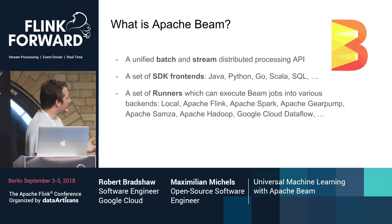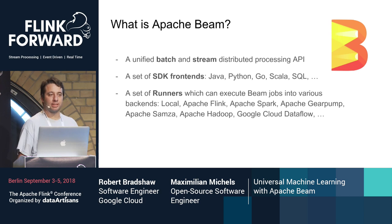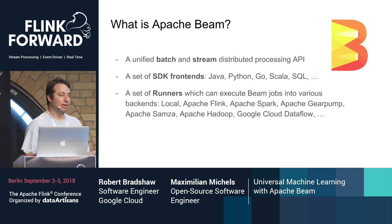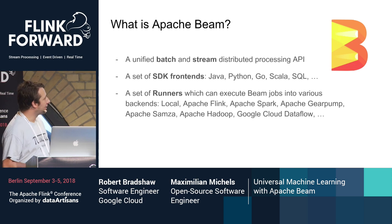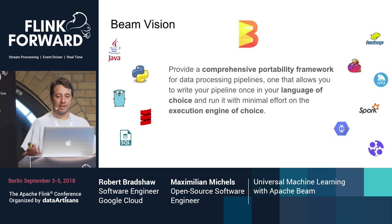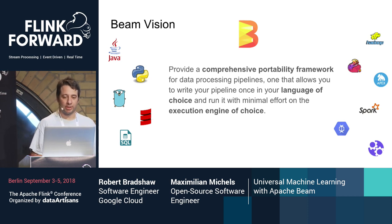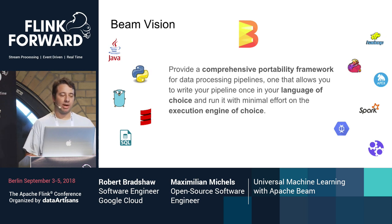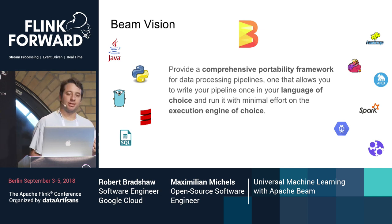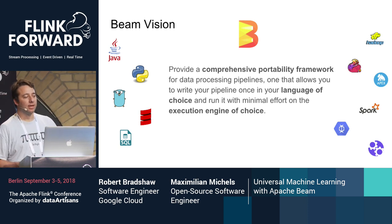Beam also provides a set of runners. A runner is something that can execute a Beam pipeline. You can run locally, on Flink, on Spark, on Dataflow, on Samza, and it's extensible — if you have a data processing engine and write the interface, you can make it run Beam pipelines. Our vision is to provide a comprehensive portability framework so you can write your pipeline in the language of your choice and run it on the execution engine of your choice with minimal effort, and even switch backends or run on two backends at once.